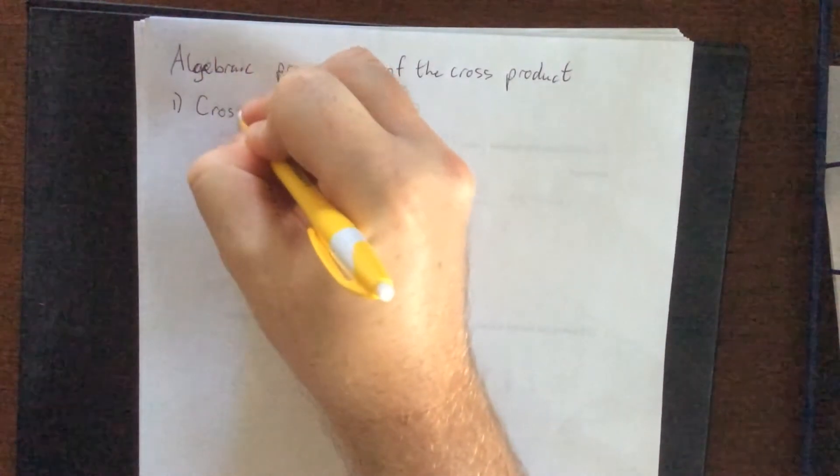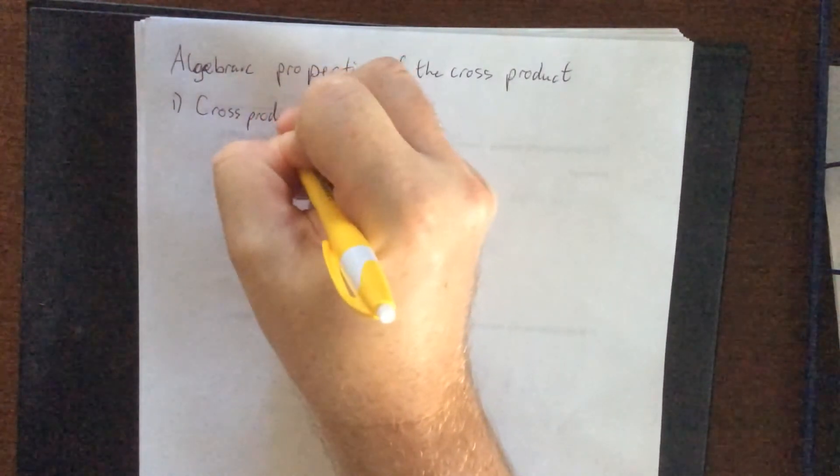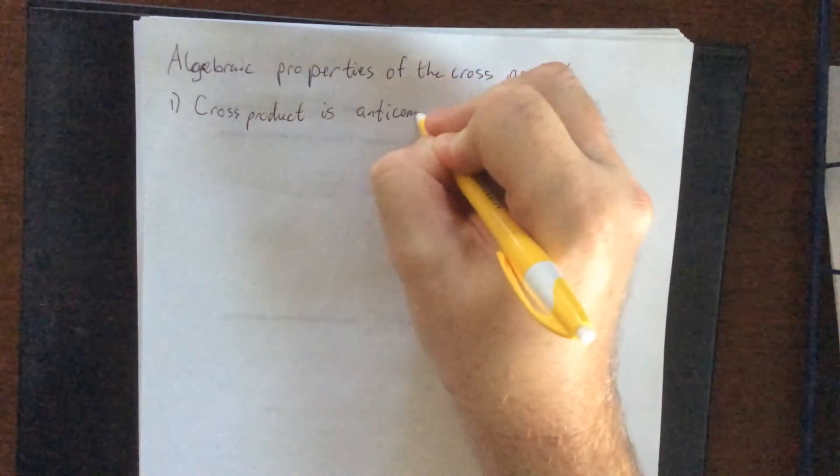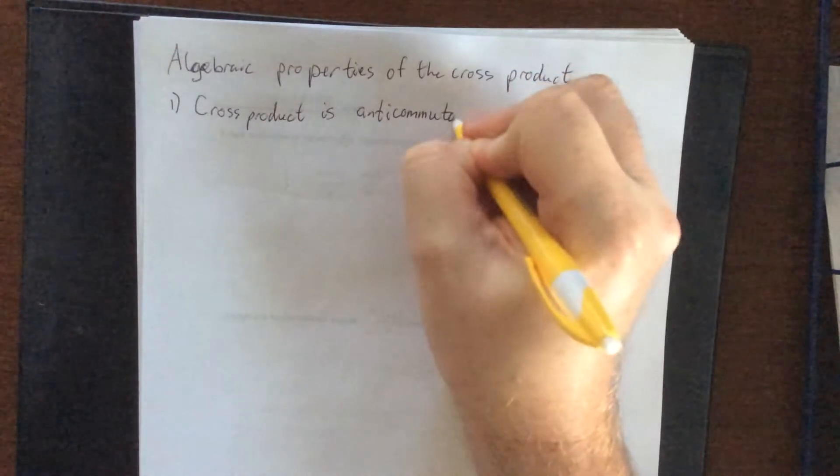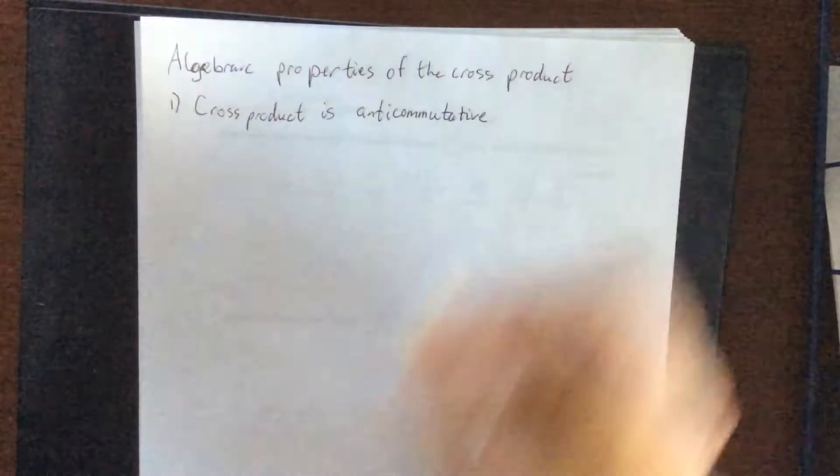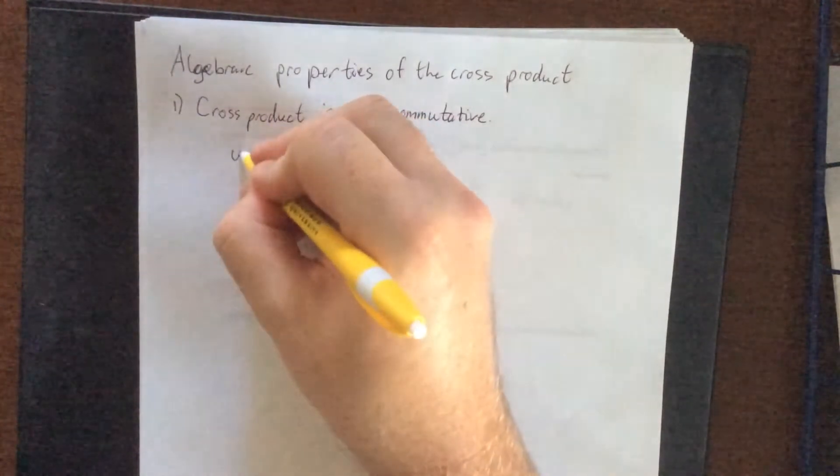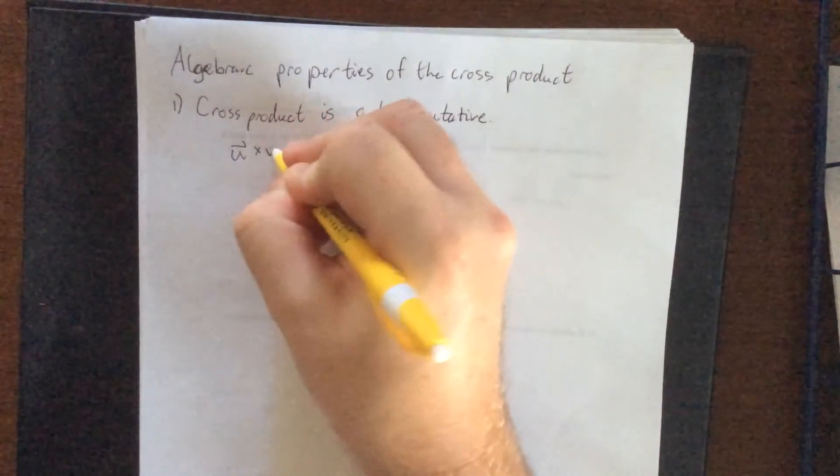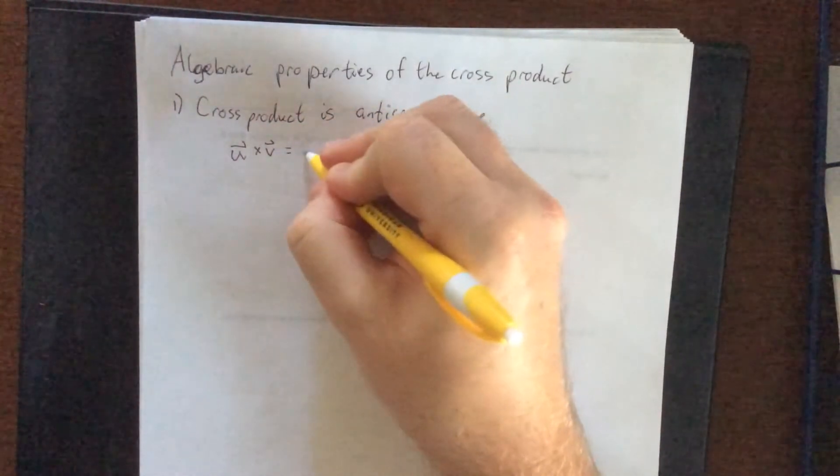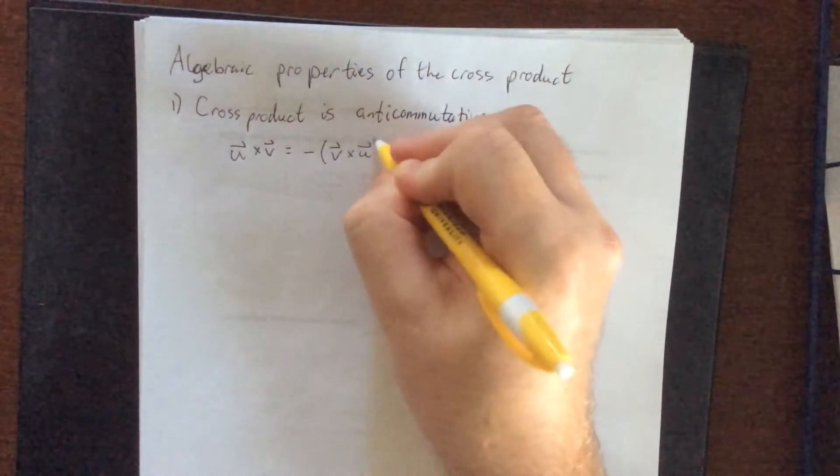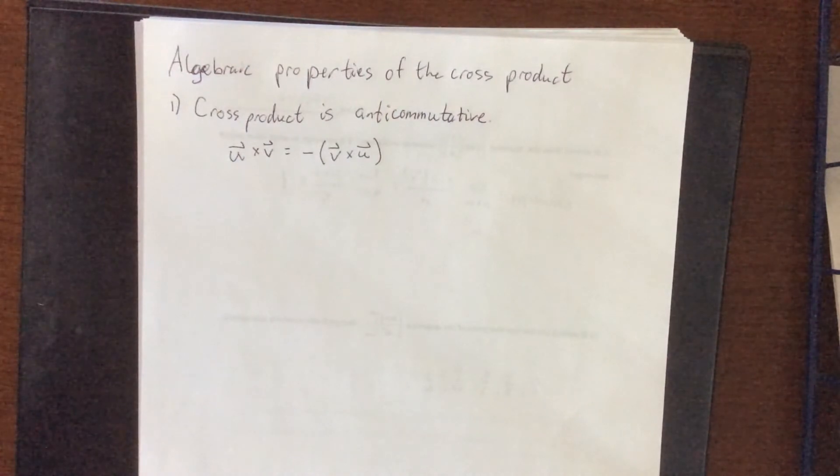The first one is that the cross product is anti-commutative. Now anti-commutative is an interesting concept. We had introduced the right-hand rule for the cross product. Anti-commutative means that if I were to reverse the order of the cross product, it is going to negate what we have.